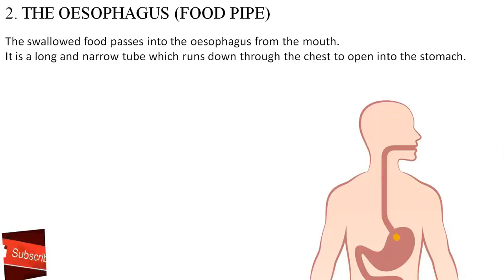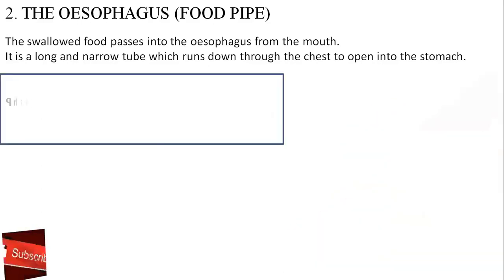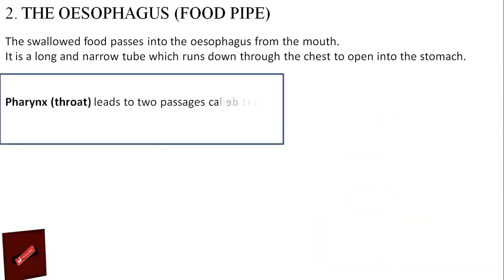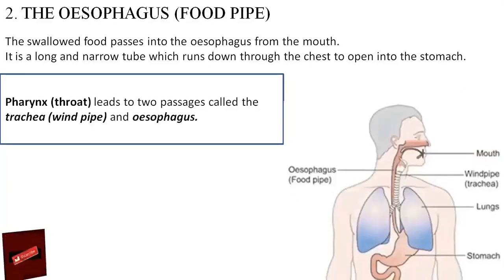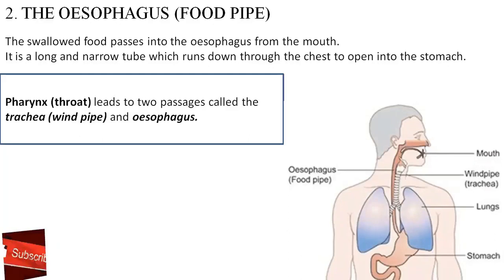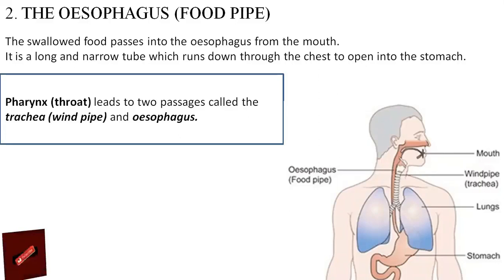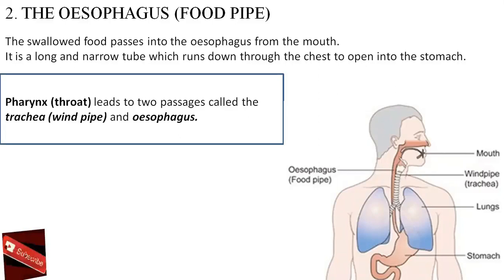Another name for pharynx is throat, and the pharynx leads to two passages called the trachea and esophagus. The trachea is also known as the wind pipe. The food pipe runs parallel to the trachea and lies just behind it. Since the esophagus and trachea lie parallel to each other, how does the food decide that it has to move into the food pipe and not into the wind pipe?